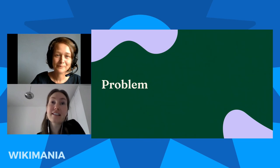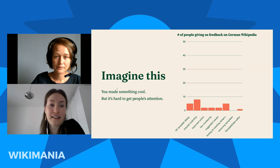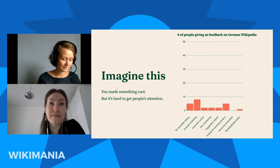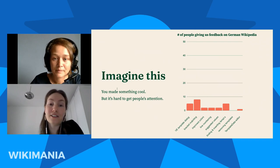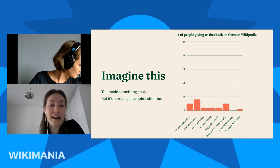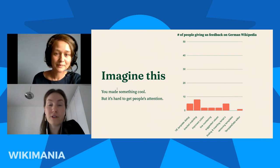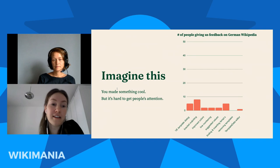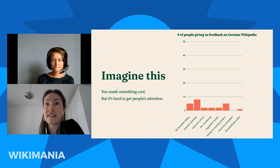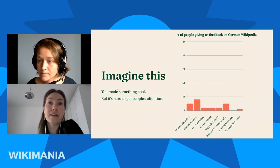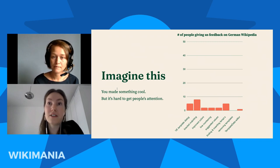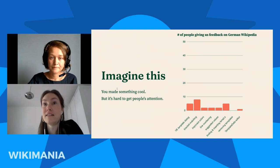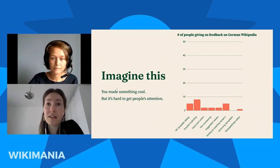For the problem, we'd like to take you on a bit of a thought journey. Imagine you made something really cool — maybe you organized an event, did an analysis, created a tool, or something completely different — and you want everyone on your wiki to know about it. You write announcements for your village pump and other pages, but there are hardly any reactions. You're worried no one will actually look at the thing you made. This has certainly happened to us. What you can see on the slide is the amount of people that commented on our latest feature releases on German Wikipedia.